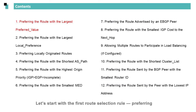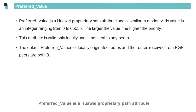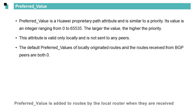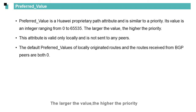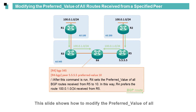Let's start with the first route selection rule: preferring the route with the largest preferred value. Preferred value is a Huawei proprietary path attribute, and is valid only on the local device. Preferred value is added to routes by the local router when they are received and is removed from the routes when they are advertised to peers. By default, preferred value is 0, which is configurable. Preferred value is equivalent to a route priority — the larger the value, the higher the priority. This slide shows how to modify the preferred value of all routes received from a specified peer.